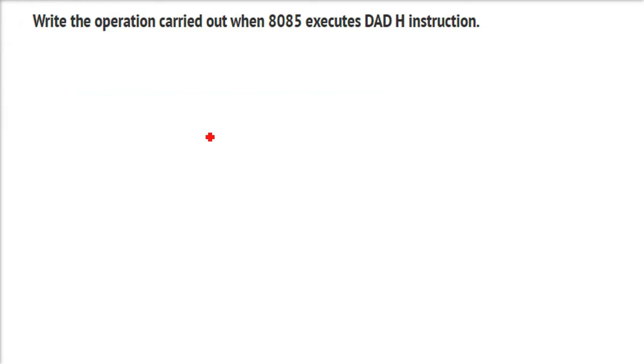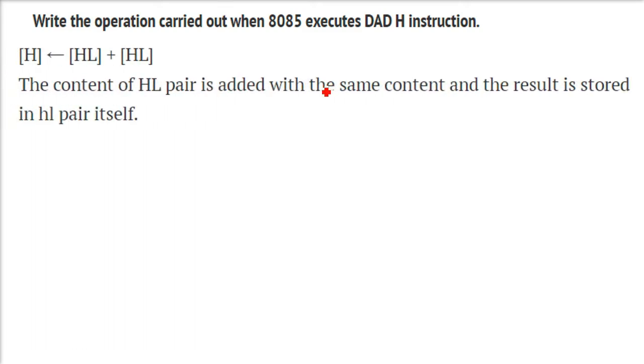Write the operation carried out when 8085 executes DAD H instruction. Now op code, operand - there are different kinds of instruction, different types of instruction. So that is one of the examples we are taking.